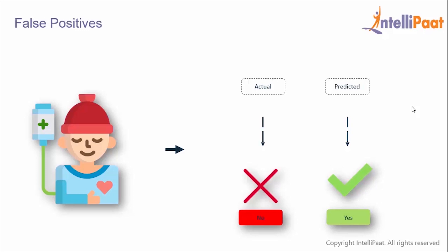Then we have false positives. These are the cases in which the predicted value is true but the actual value is false — the model predicted that the patient has cancer but in reality they don't. This is also known as a Type 1 error.